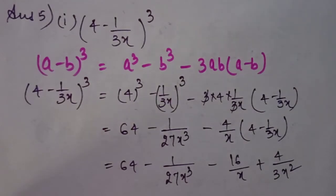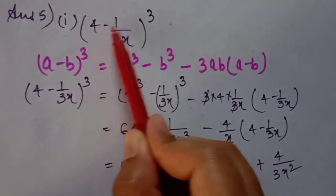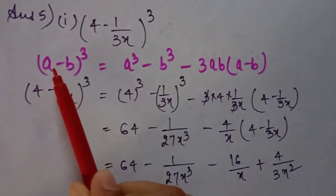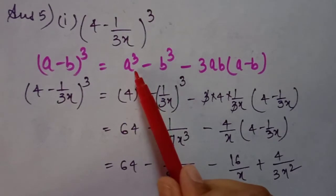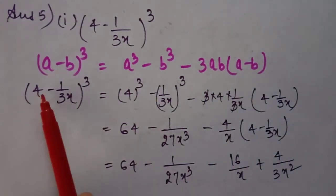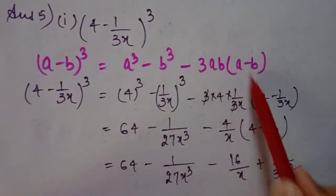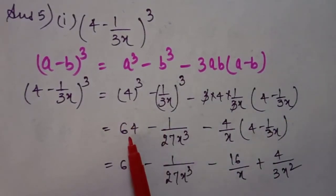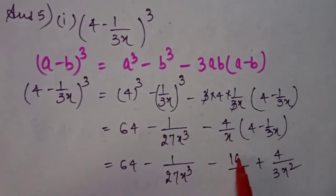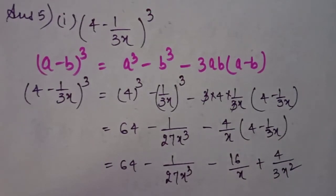Next question: expand the following. The first part uses the identity (a minus b) whole cube, which equals a cubed minus b cubed minus 3ab(a minus b). Replace a with 4 and b with 1 upon 3x. Put the values of a and b into all terms and solve — cubing each and multiplying carefully, noting that signs change: when multiplying with the first term result is negative, with the second term minus times minus gives plus.